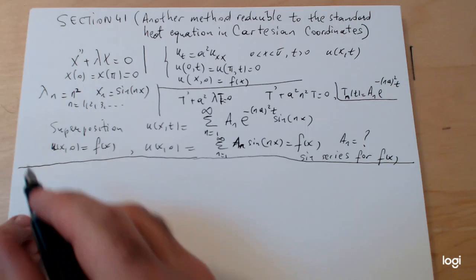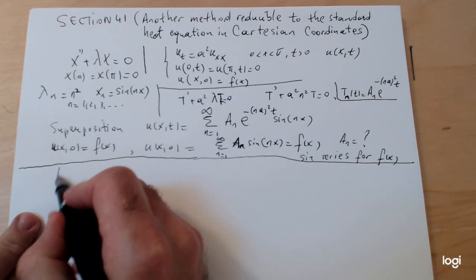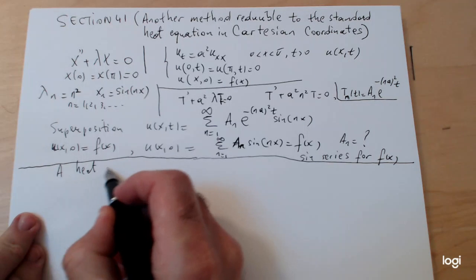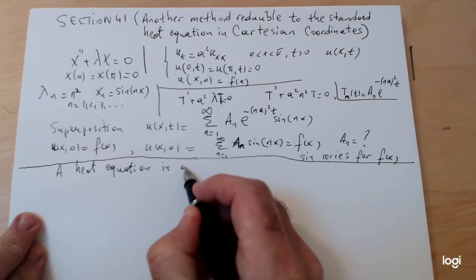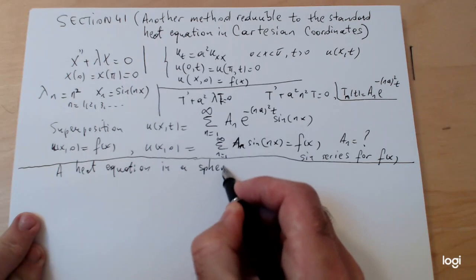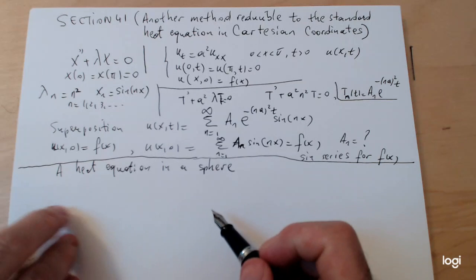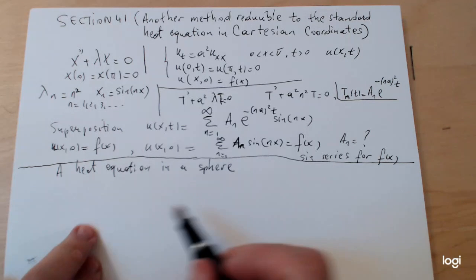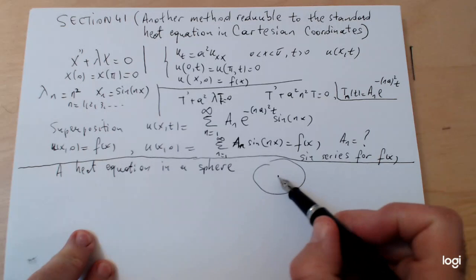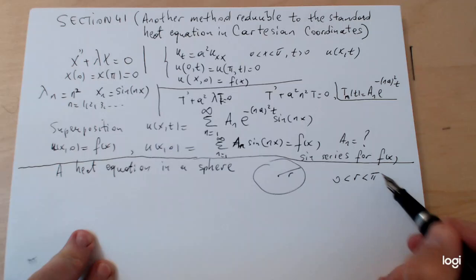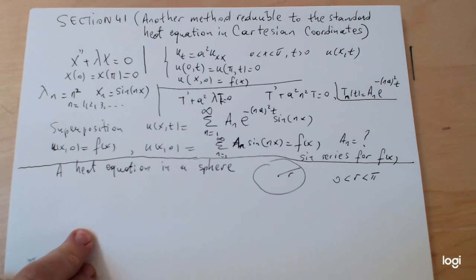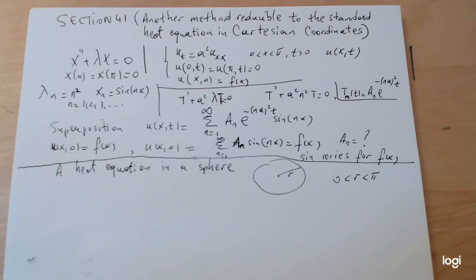In particular, we're going to talk about a heat equation in a sphere. Using the notation in the textbook, let's imagine that the object is in the shape of a sphere, and then the radius of that object is between zero and pi. Again, I'm going to use the interval zero to pi just to make it easy when it comes to writing down the solution, finding the eigenvalues and eigenfunctions, although remember we can adjust it to any interval.